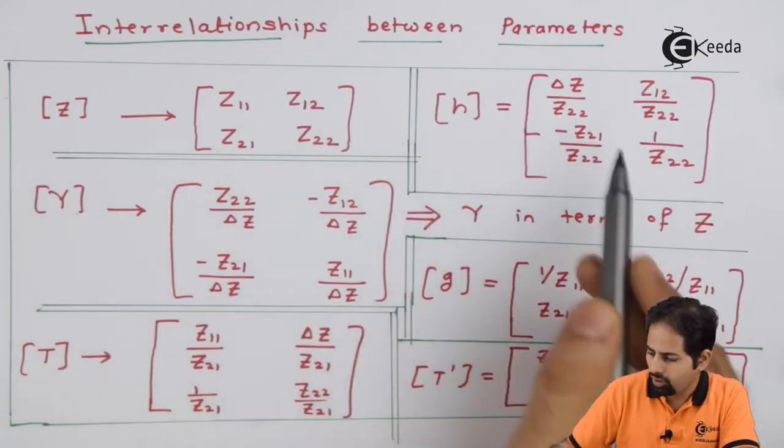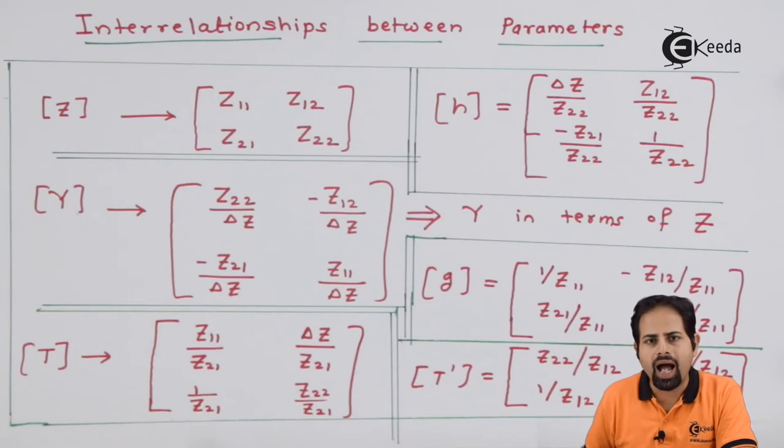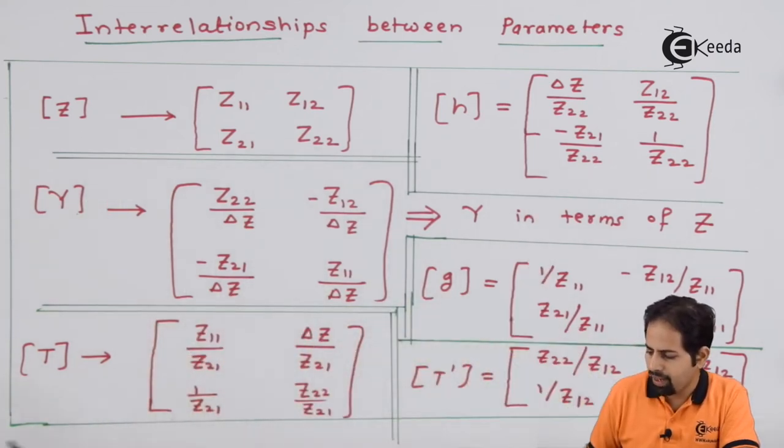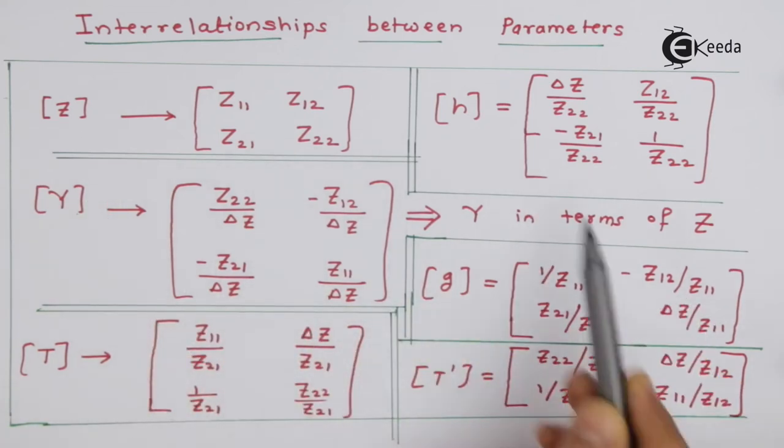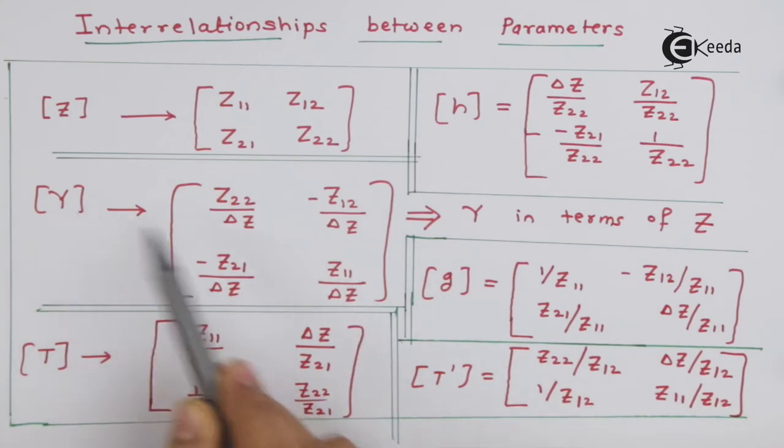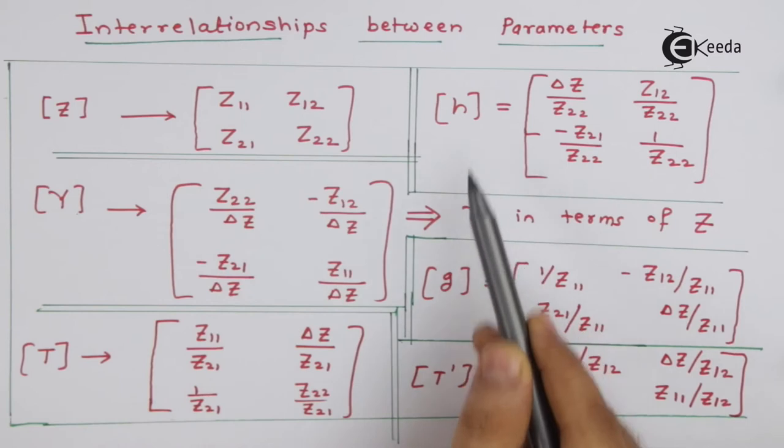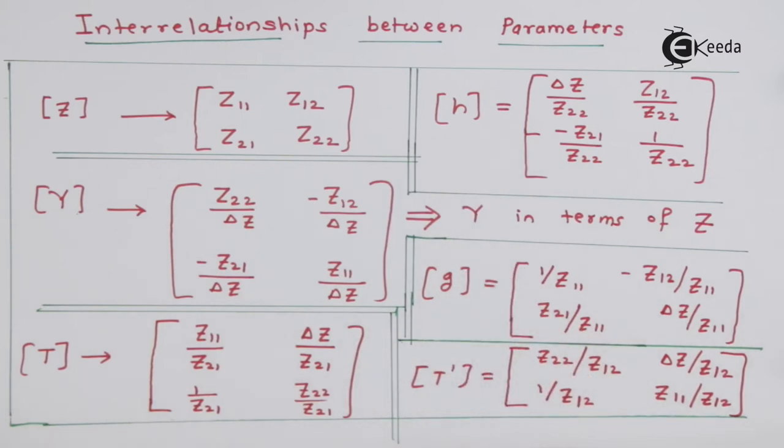As you can see here on this page, I have written all the parameters specifically in terms of Z parameters. That means Y matrix in terms of Z, T, H, G and T' - all these matrices or all these parameters completely in terms of Z.